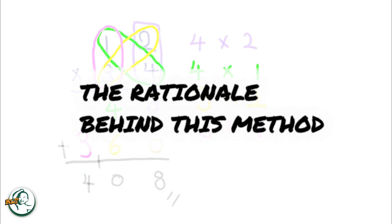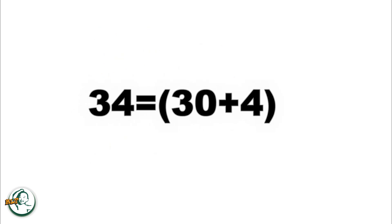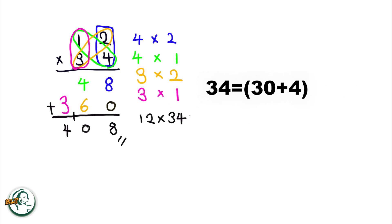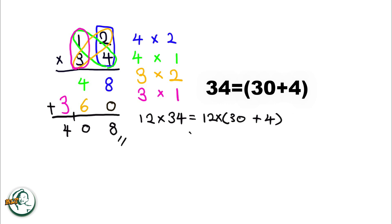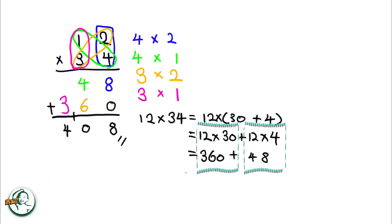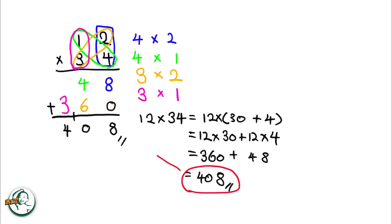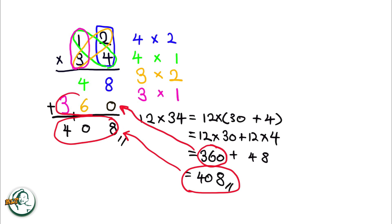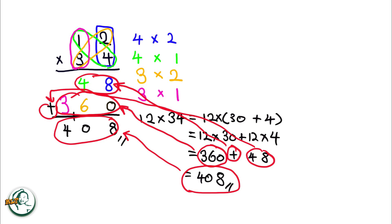Let's delve into the rationale behind this method. Consider 34 as 30 plus 4. Now we can express 12 times 34 as 12 times (30 plus 4). This expands into 12 times 30 plus 12 times 4, giving us 360 and 48 respectively. Adding these results, 360 plus 48 equals 408. This explains why we need to add these two numbers in the column method.